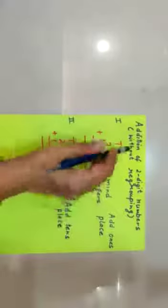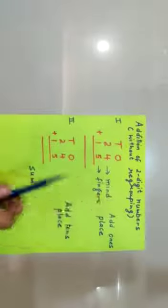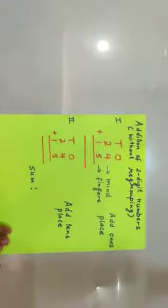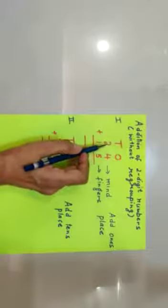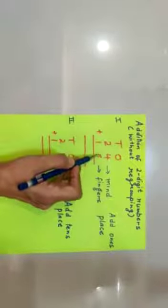Now let's revise addition of two digit numbers without regrouping. You just have to follow two steps in this. For example, the question is 24 plus 15.